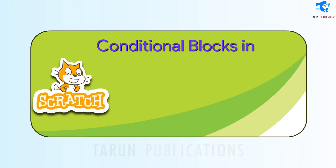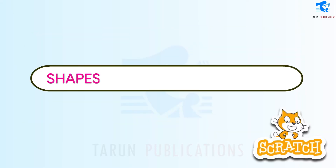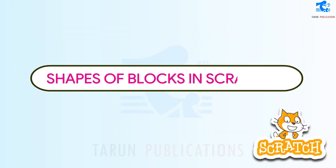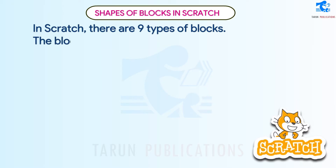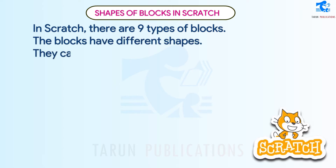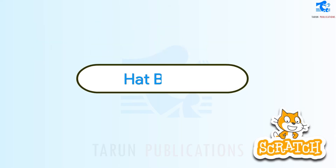Conditional Blocks in Scratch. In Scratch, there are 9 types of blocks. The blocks have different shapes and can be divided into 6 different shapes.